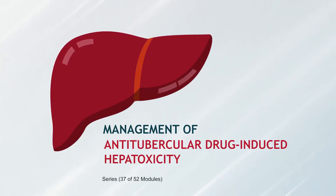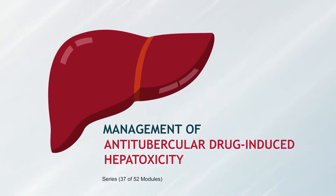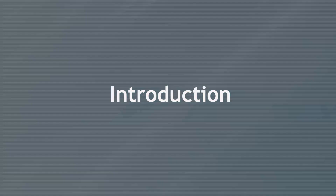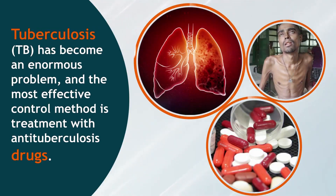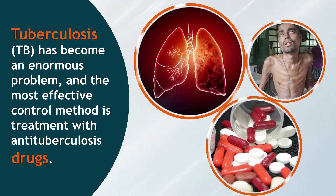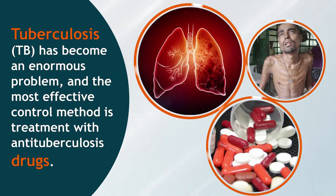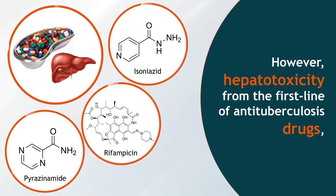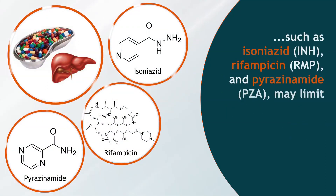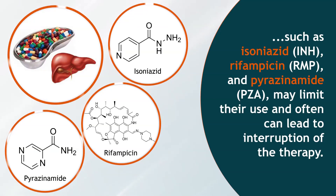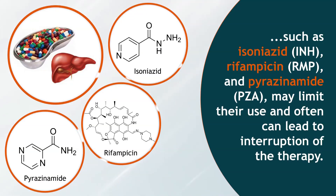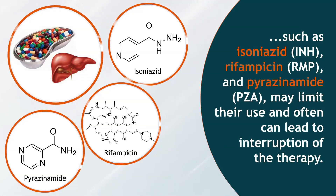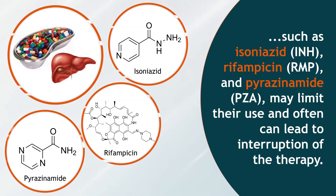Management of Anti-Tubercular Drug Induced Hepatotoxicity. Tuberculosis (TB) has become an enormous problem, and the most effective control method is treatment with anti-tuberculosis drugs. However, hepatotoxicity from the first-line anti-tuberculosis drugs such as isoniazid (INH), rifampicin (RMP), and pyrazinamide (PZA) may limit their use and often can lead to interruption of the therapy.